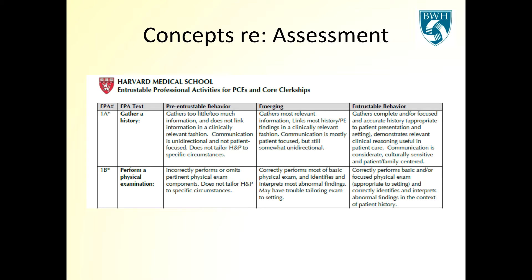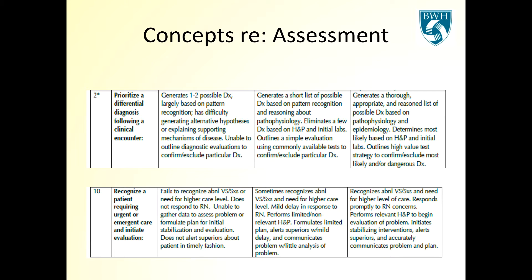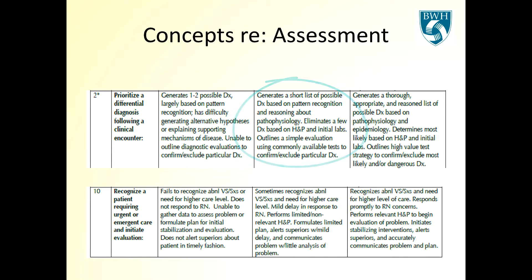Here are some examples for gathering a history and performing a physical exam, and for prioritizing a differential diagnosis. In the pre-entrustable category, the student can only generate a couple of ideas for a diagnosis, largely using pattern recognition. As they emerge, the list potentially becomes longer, and more importantly, they're making lists based on reasoning of pathophysiology and other sciences. When they become entrustable, they're generating a thorough and appropriate list relying on pathophysiology, epidemiology, and other sciences.